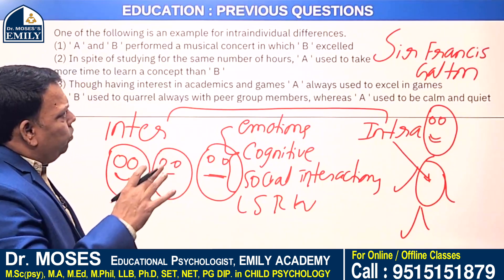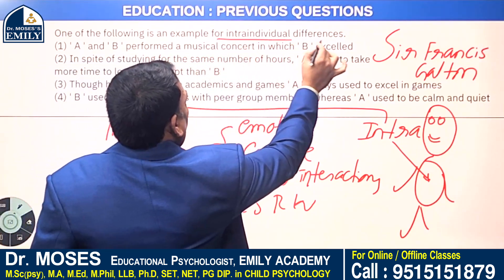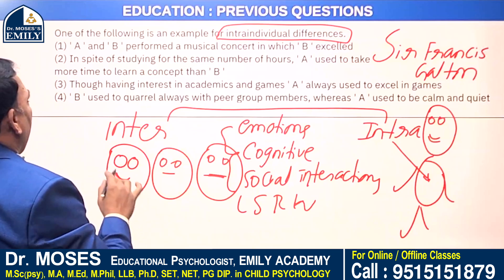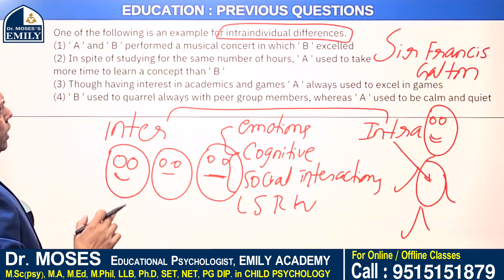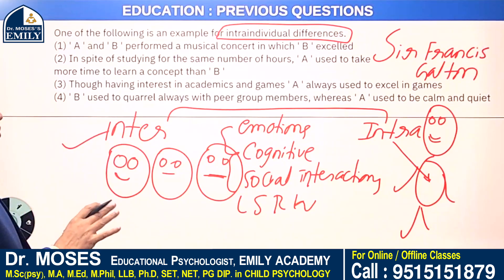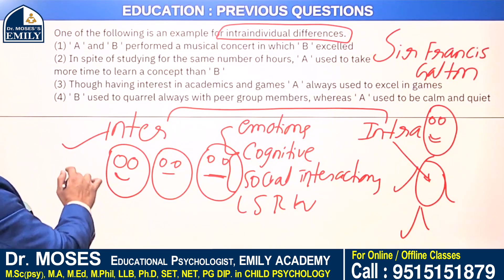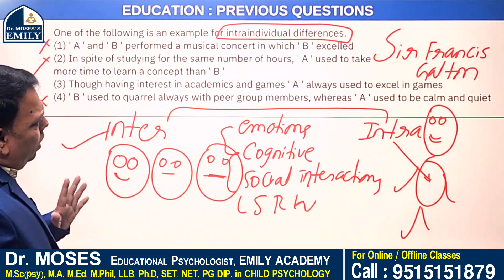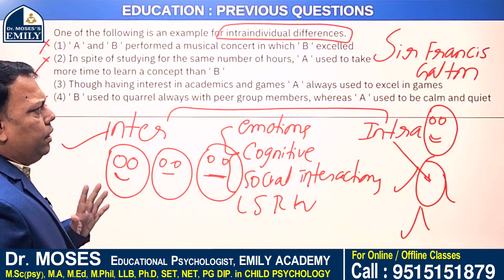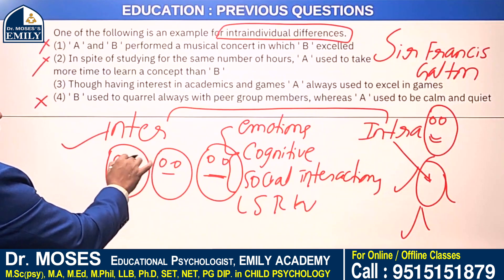There are four examples given. The question asks which one is an example of intra-individual differences. Option 1 — A and B performed a musical concept in which B excelled — is an inter-individual difference. Option 2 — A used to take more time to learn a concept than B — is also inter-individual. Option 4 — B quarrelled with peer group members whereas A was calm and quiet — is also inter-individual.